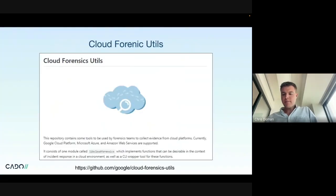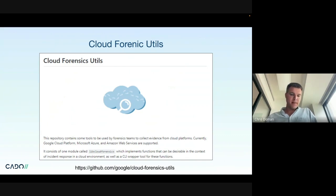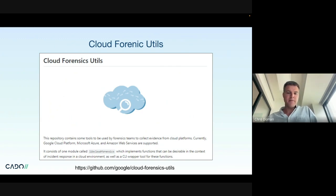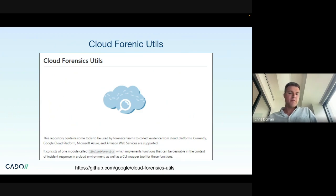First up, there's Cloud Forensic Utils. This is from Google themselves, and it's available both as a library with Cloud Forensics for Python, and also as a CLI. It can be used to collect forensic evidence, so definitely full disk snapshots from Google Cloud, Azure, and AWS.